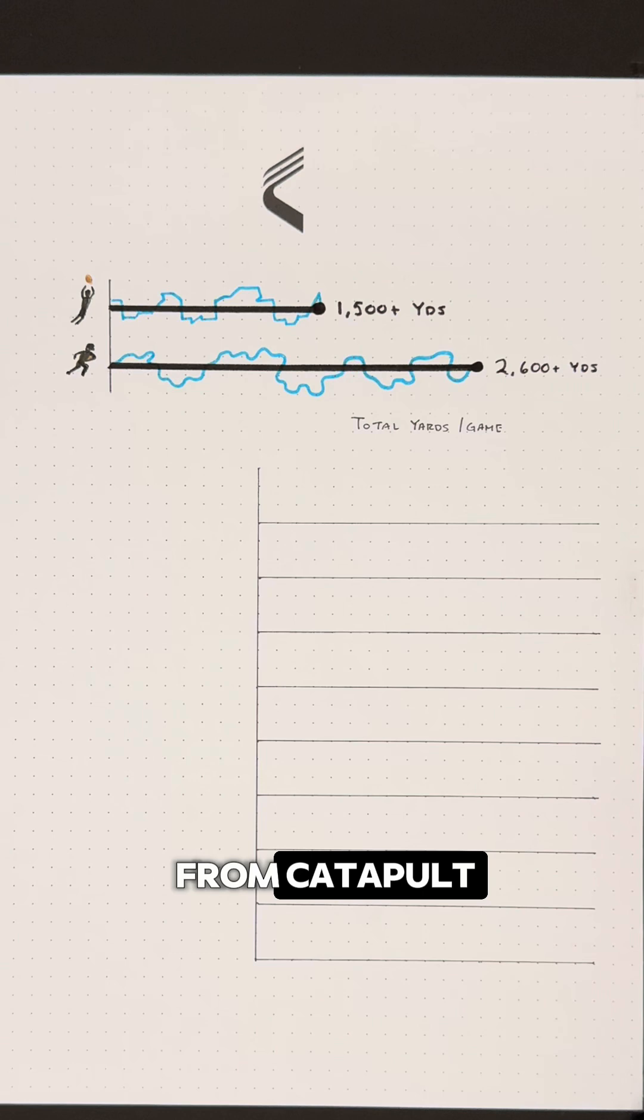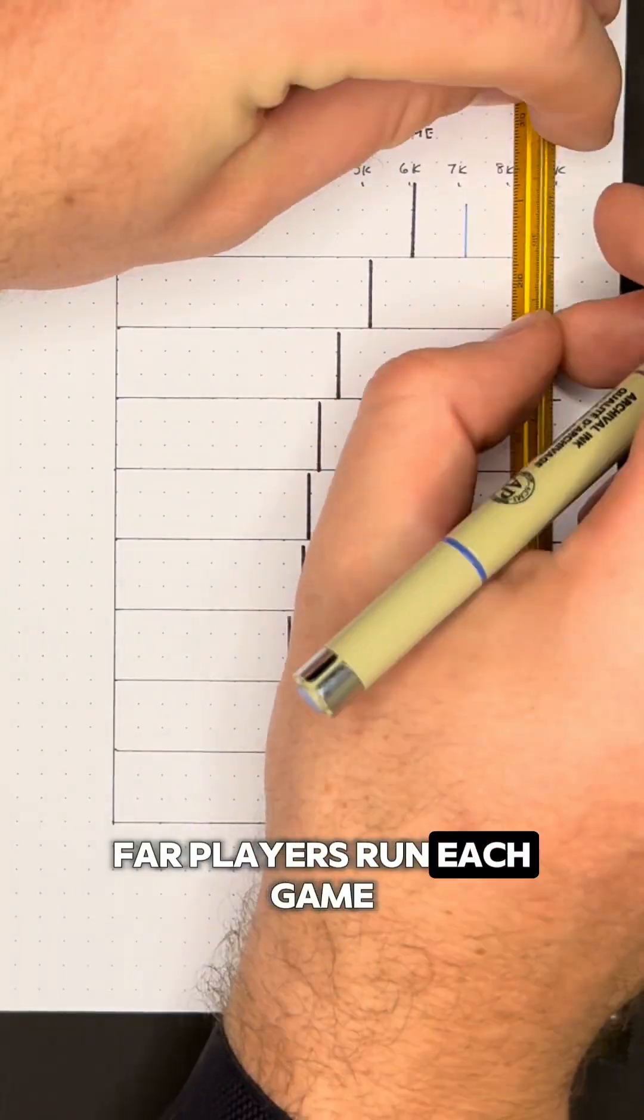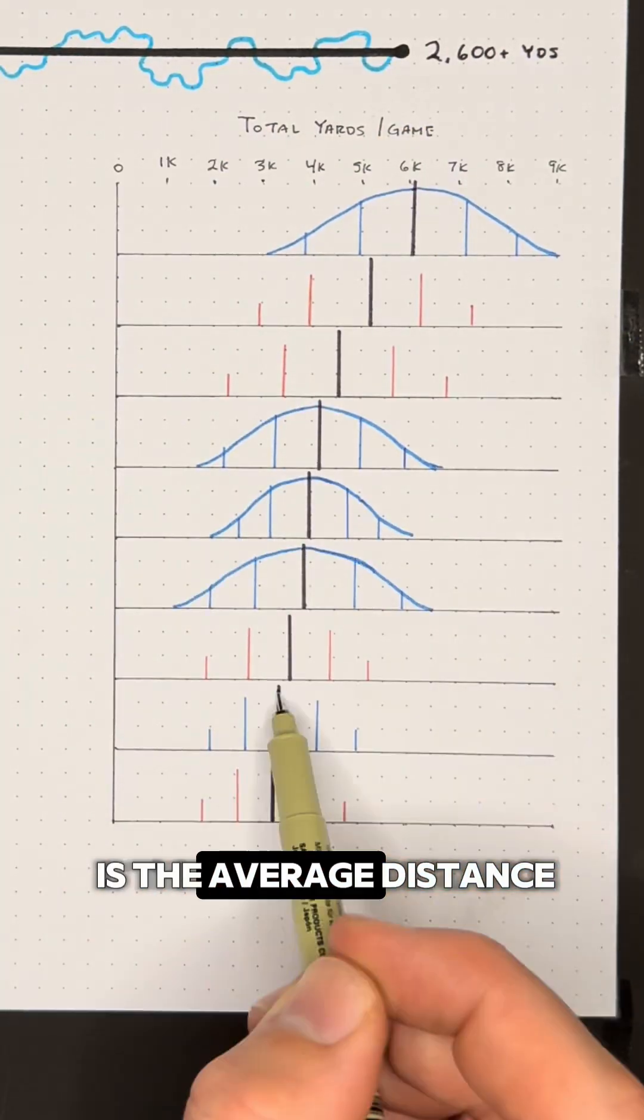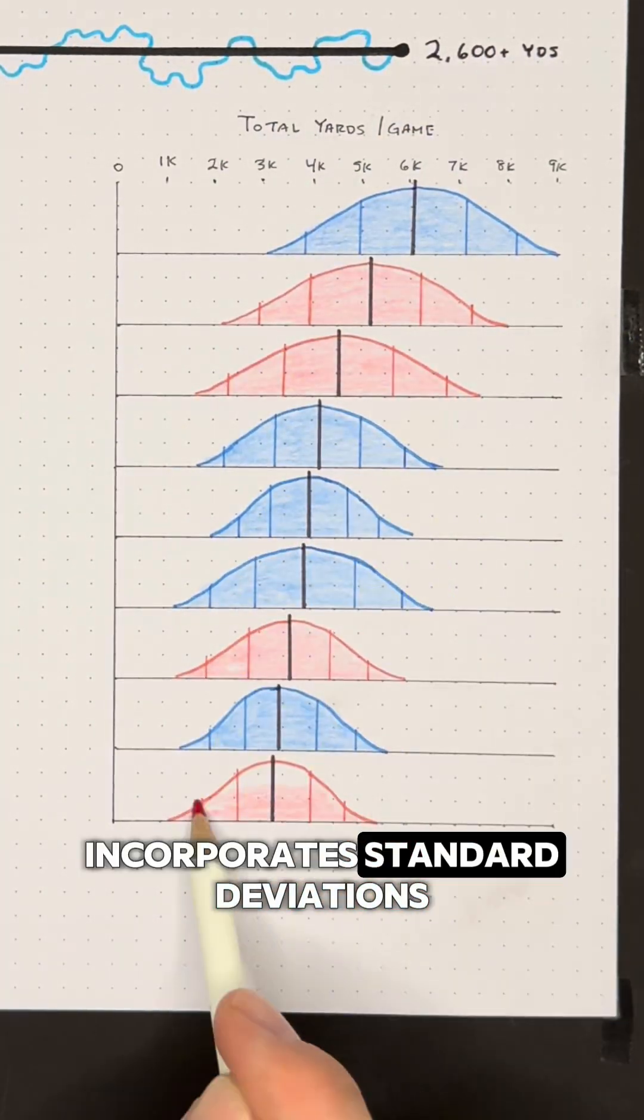With performance tracking data from Catapult, these charts show how far players run each game and are split out by position with blue for offense and red for defense. Then the black line is the average distance while the bell curve incorporates standard deviations.